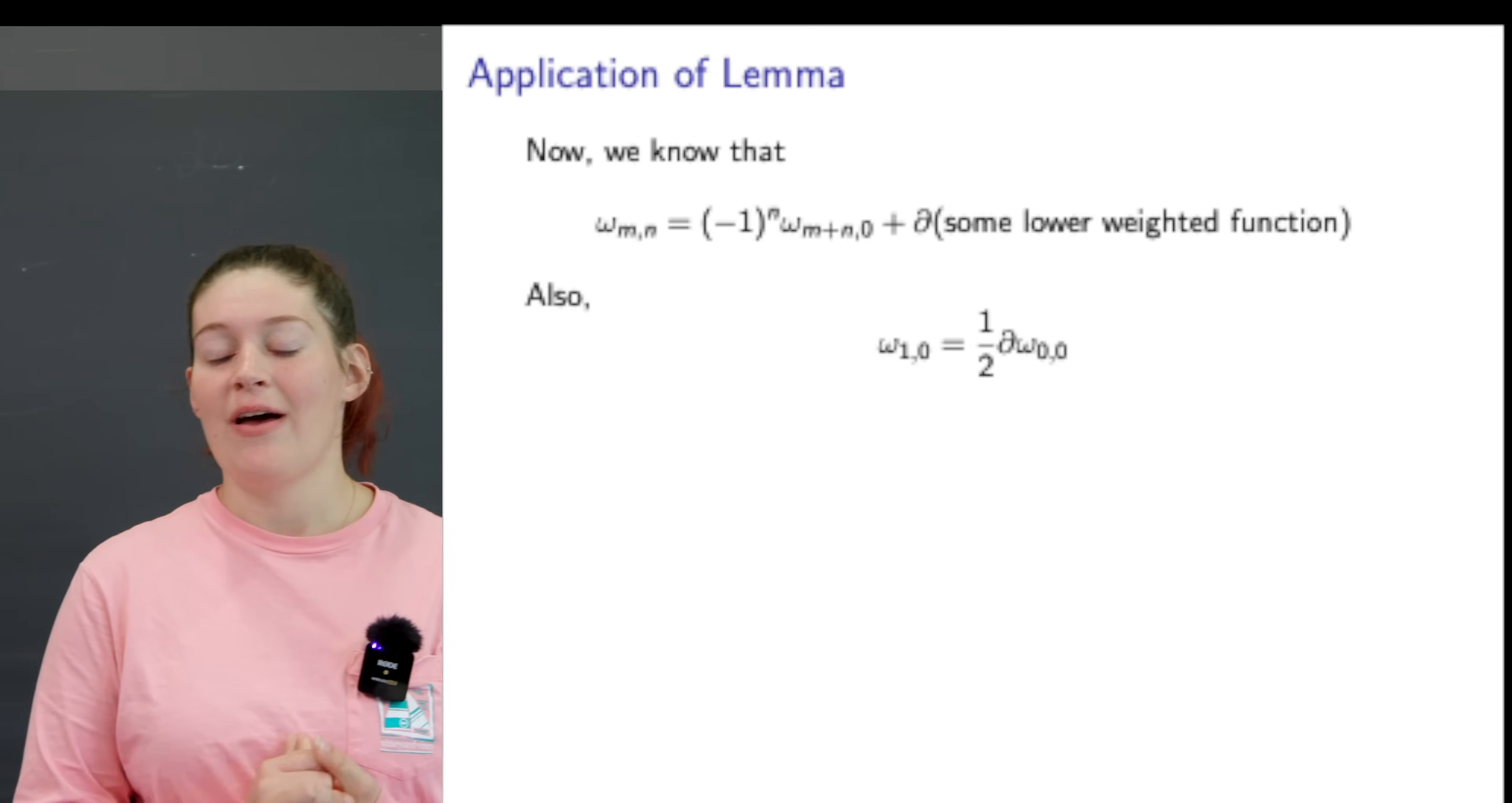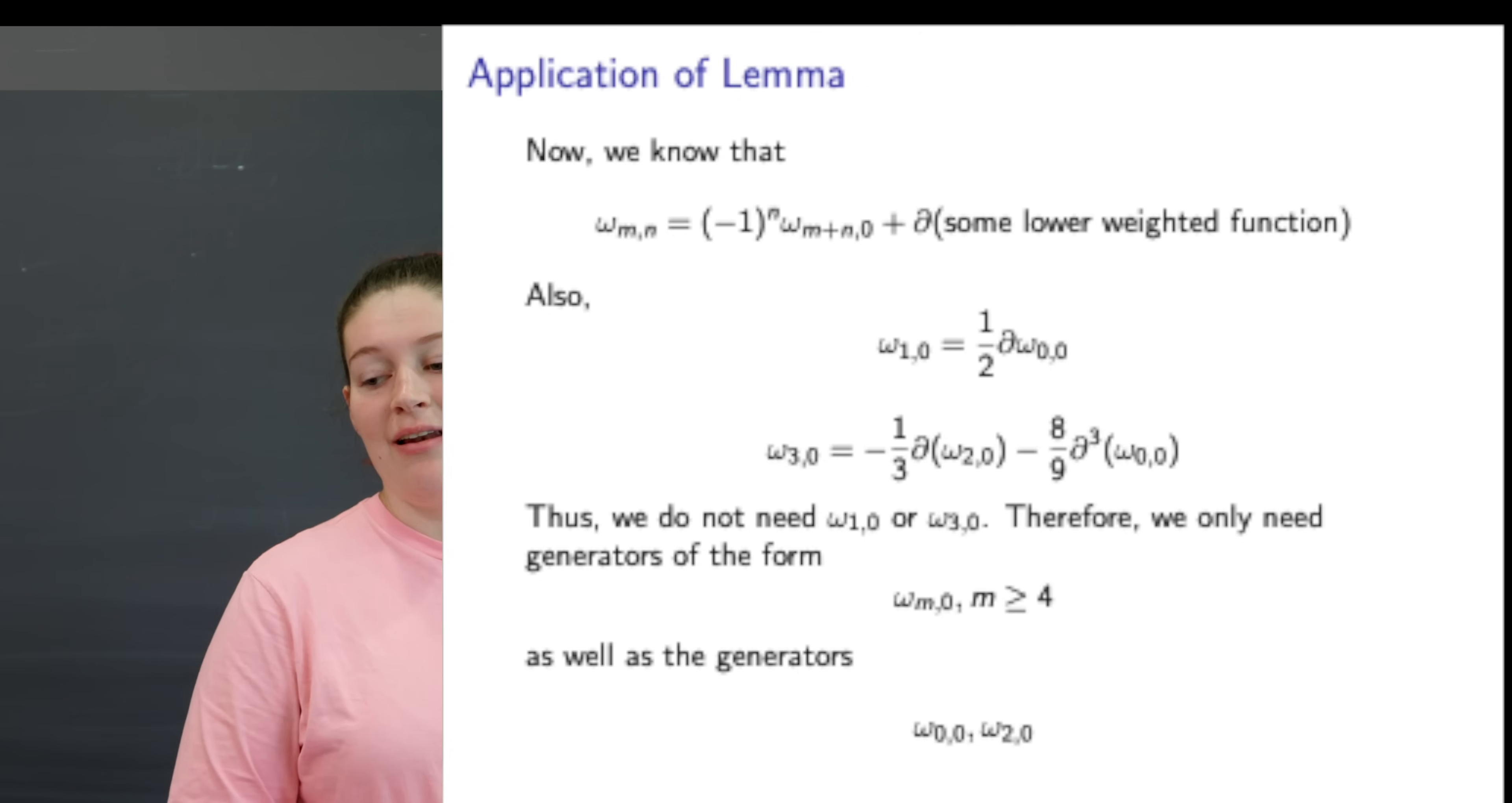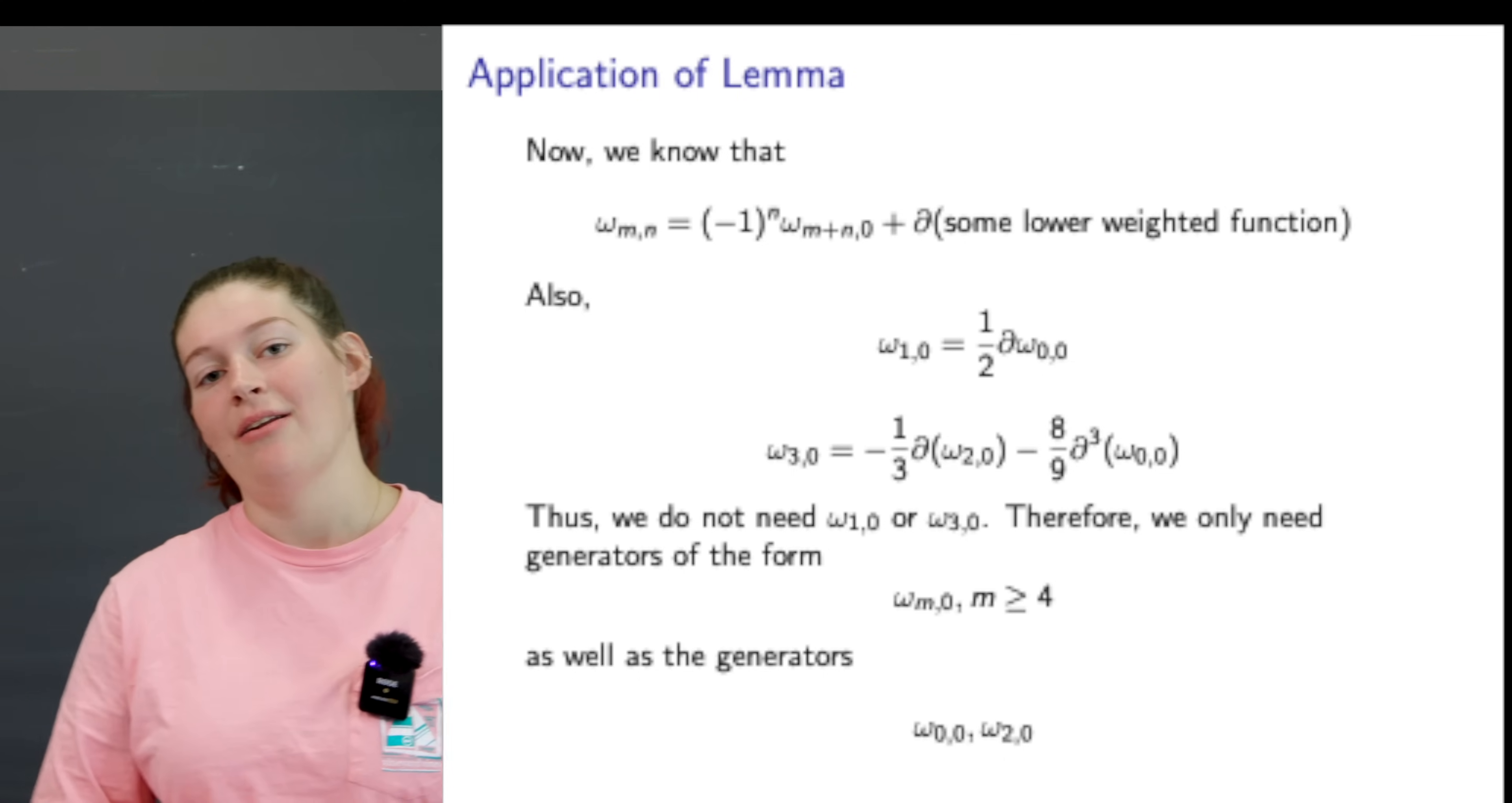From our proof we know that omega_{M,N} equals (-1)^N times omega_{N+N,0} plus the partial derivative of some lower weighted function. We also know that omega_{1,0} equals one half the partial derivative of omega_{0,0} and that omega_{3,0} equals negative one third the partial of omega_{2,0} minus 8 over 9 the third derivative of omega_{0,0}. Thus we don't need omega_{1,0} or omega_{3,0}, and therefore we only need generators of the form omega_{N,0} where M is greater than or equal to 4, as well as the generators omega_{0,0} and omega_{2,0}.